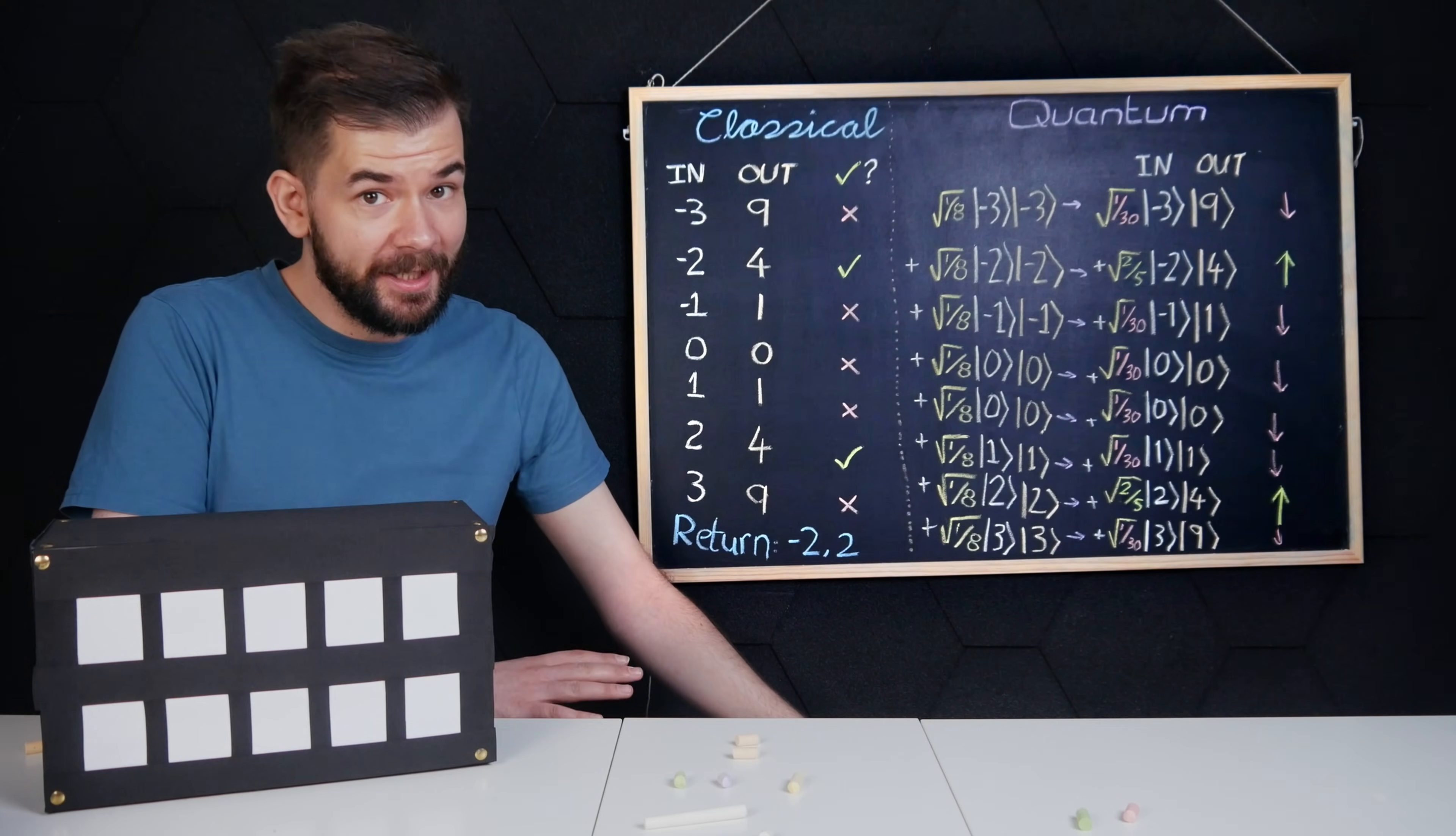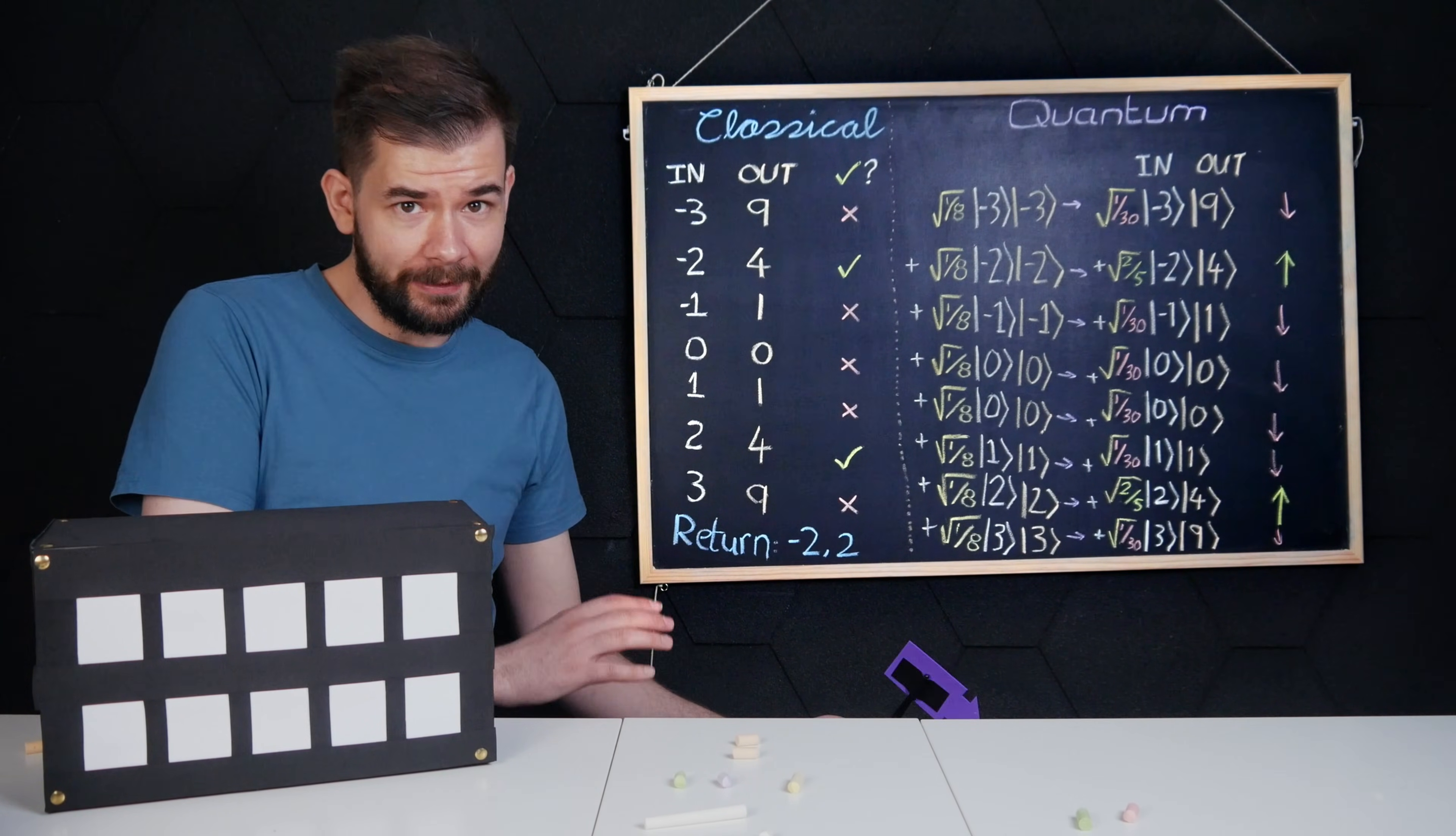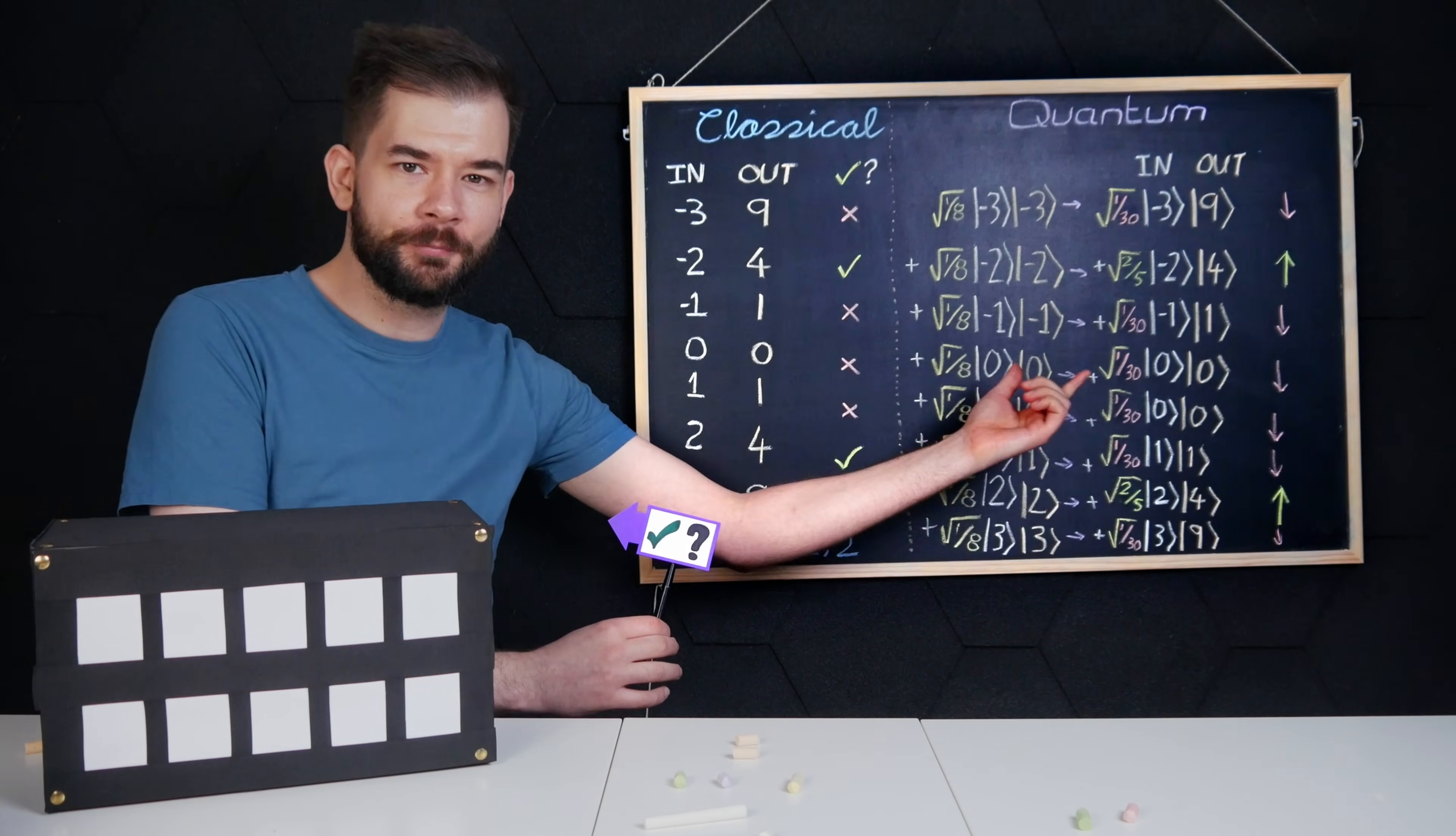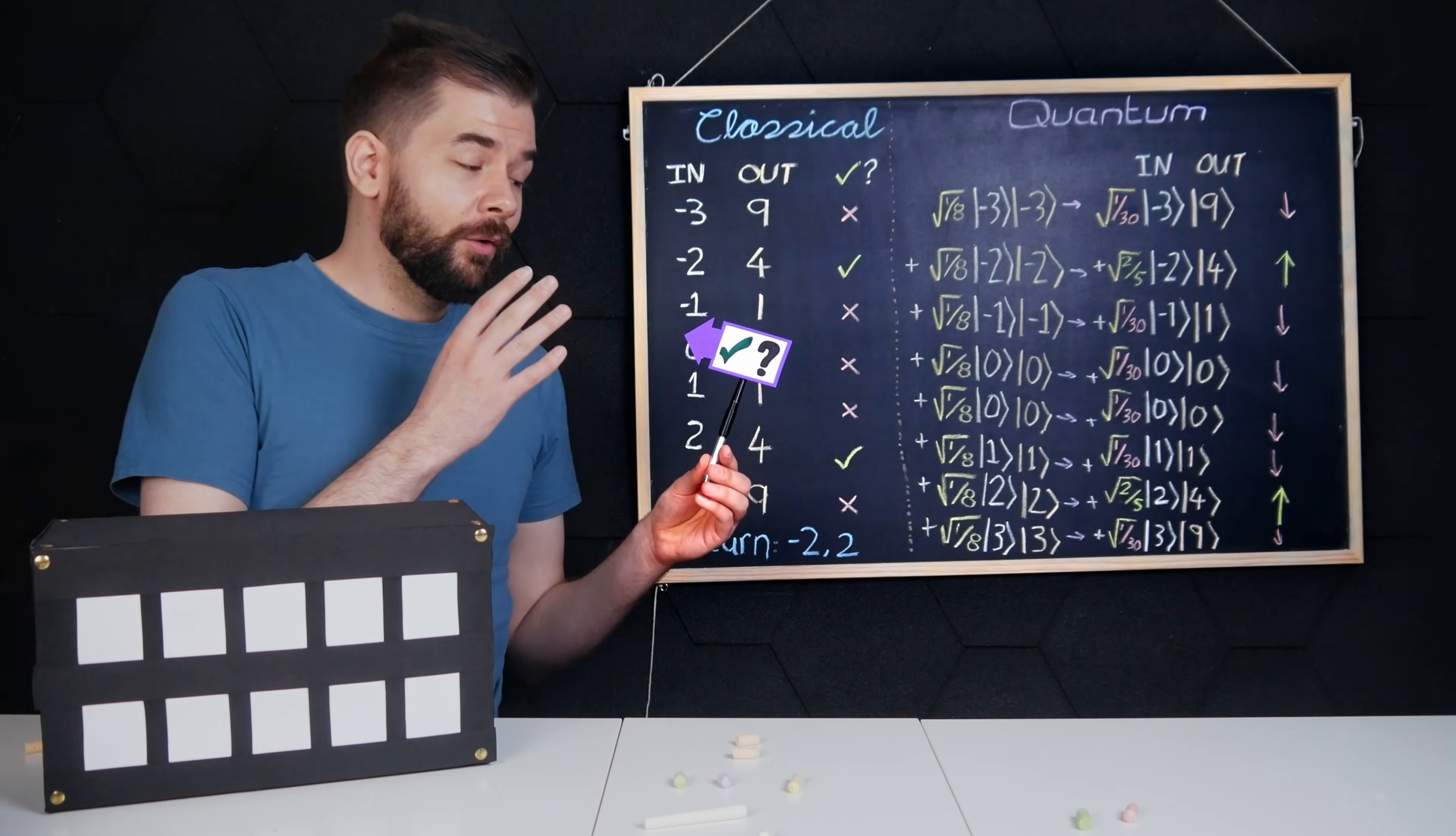But, and it's the biggest but that I can think to discuss without getting my video demonetized, there is a huge problem that I glossed over. This amirite function that magically inflates the probability for the correct output. How do we actually make this? Most of the time, we can't.